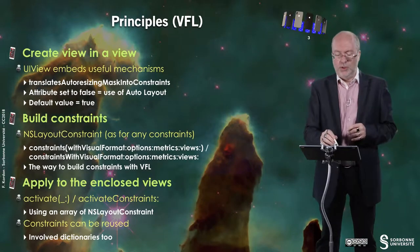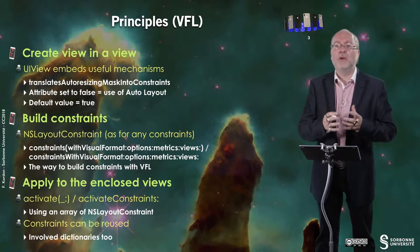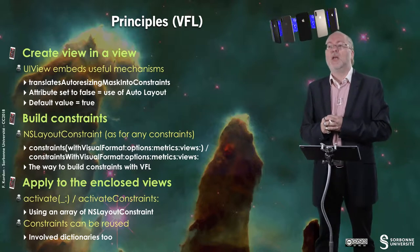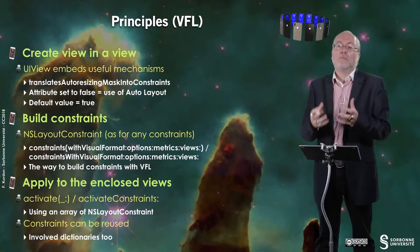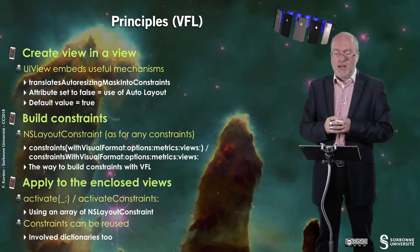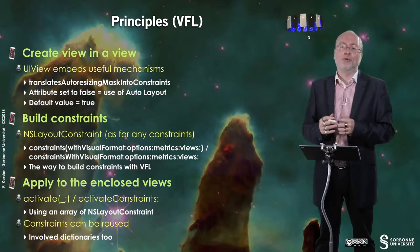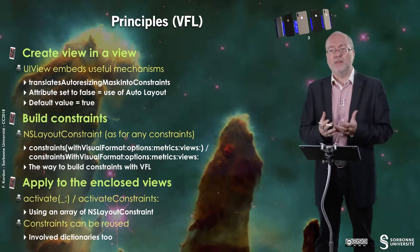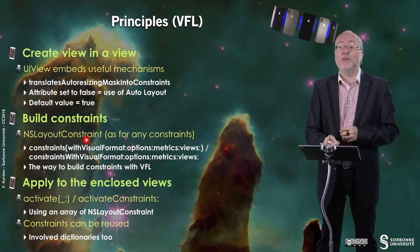The principles are quite simple. You create a view within a view. The UIView class and its inherited variations embed several mechanisms. The first is a mechanism to deal with constraints — there is an attribute you can set to false. If you set this attribute to false, it means you will make use of Auto Layout. The default value is true, so when you create a UIView, Auto Layout is not activated by default, but you can activate it.